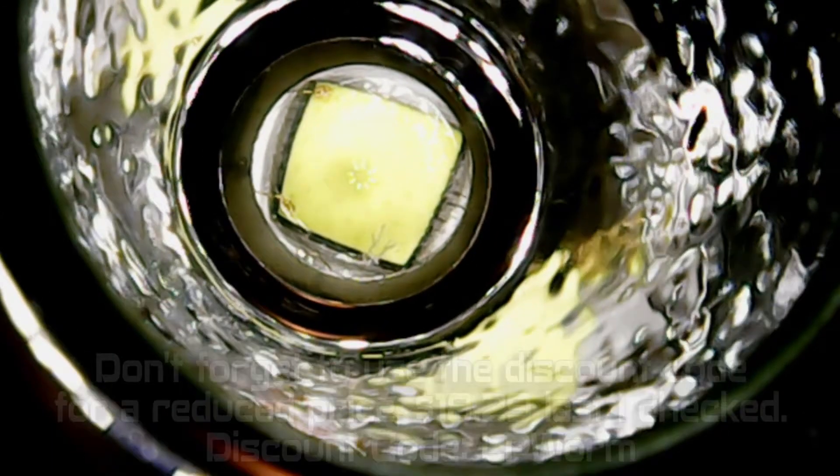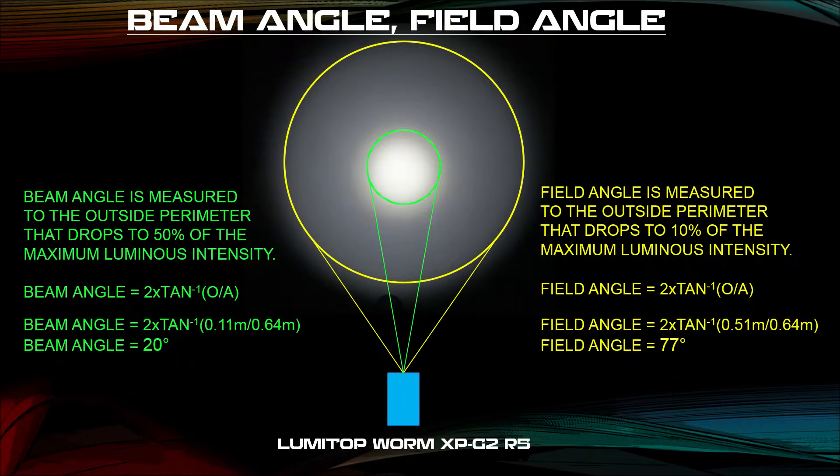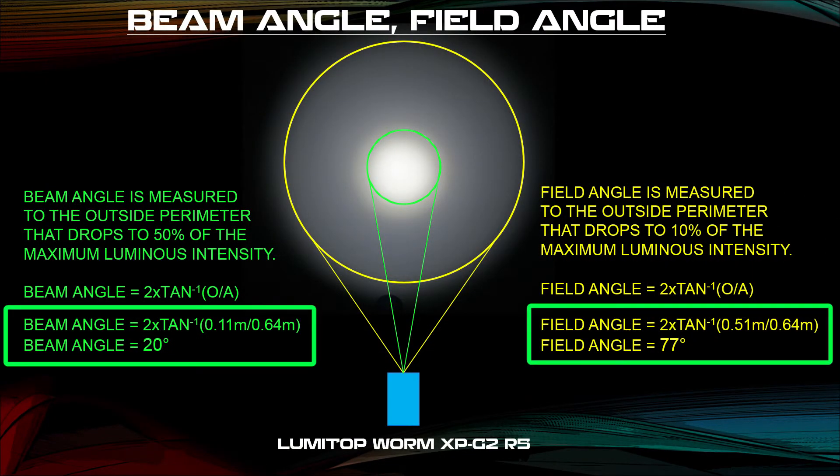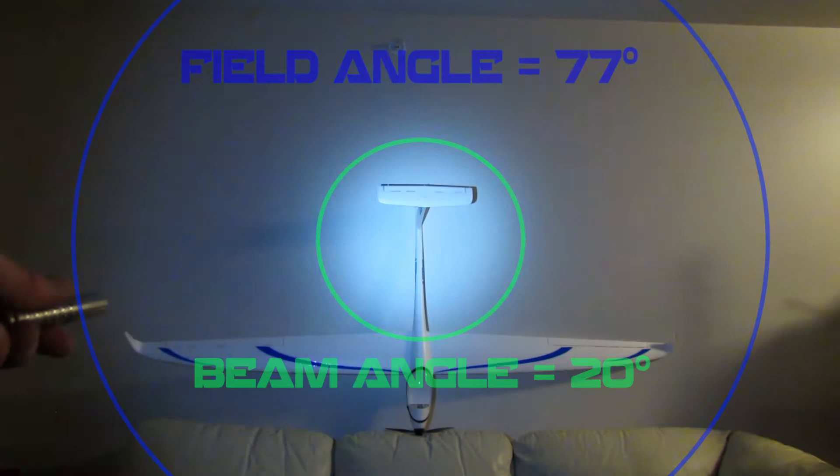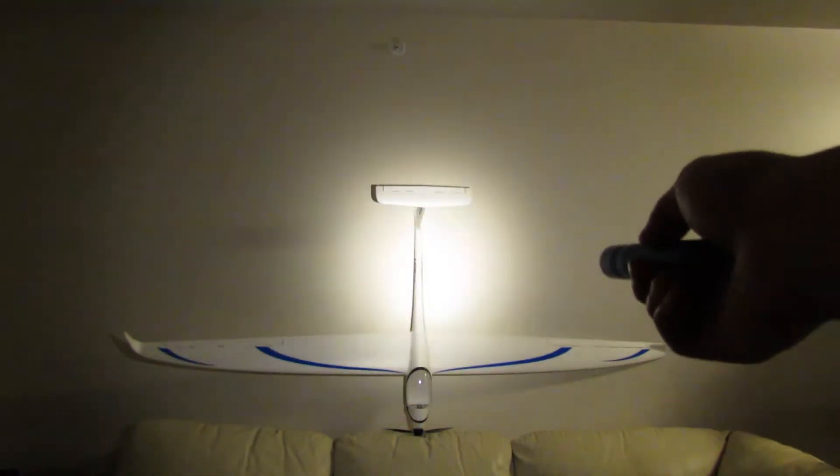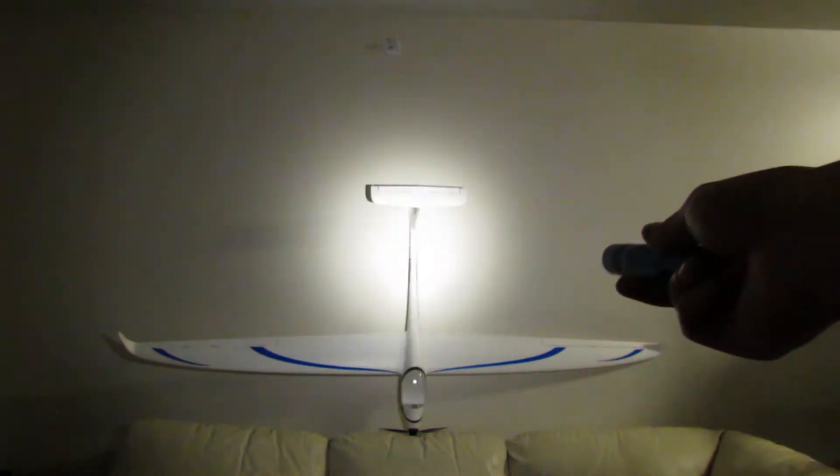The orange peel reflector creates a nice distribution. The beam angle is 20 degrees and the field angle is 77 degrees. So with a small light, you're getting a wider coverage. That's helpful in trails so you can see off to the side and down the middle.